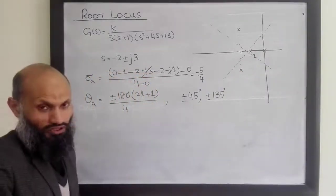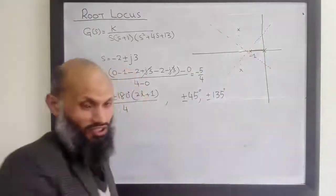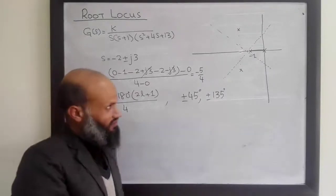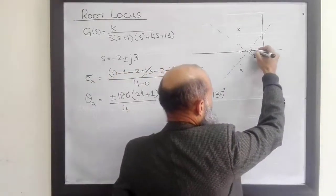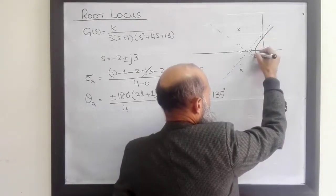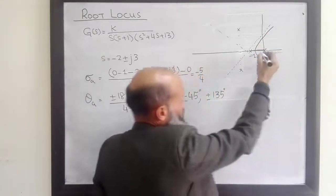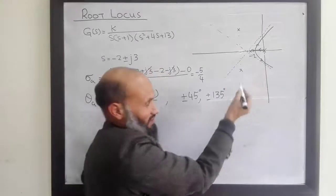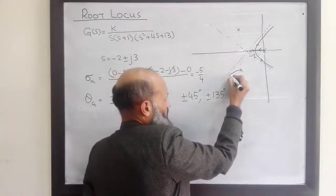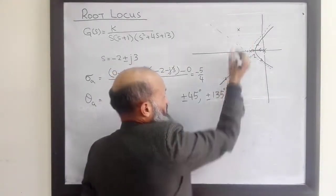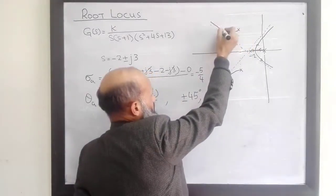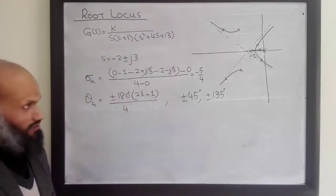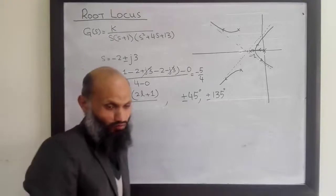We know that the root locus will emerge from the poles and become parallel to these asymptotic lines. For a rough sketch: locus emerges from the poles and becomes parallel to the asymptotic lines. The locus from the complex poles becomes parallel to the ±135° asymptotes, and from the real poles to the ±45° asymptotes.